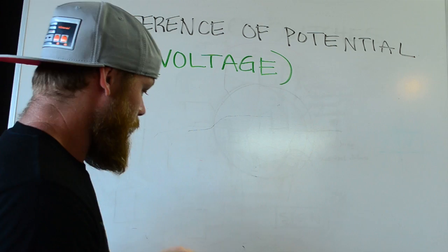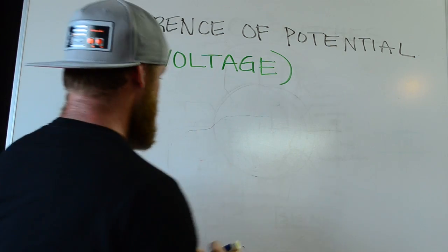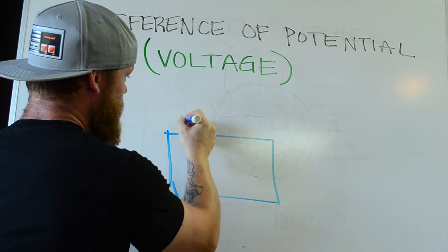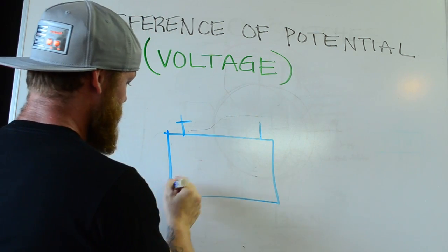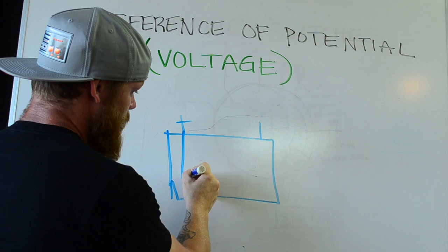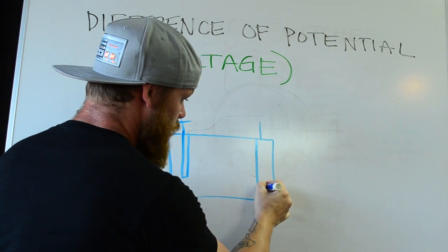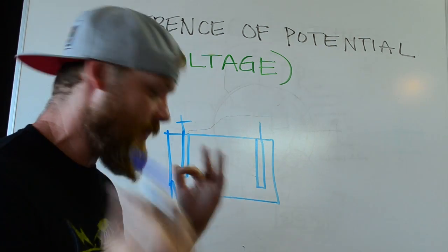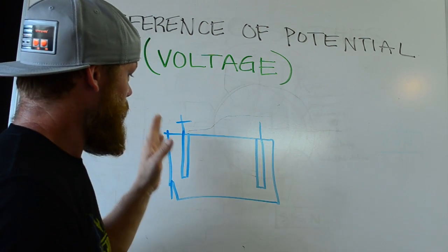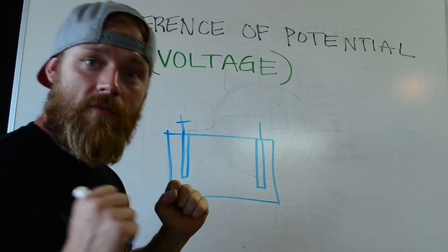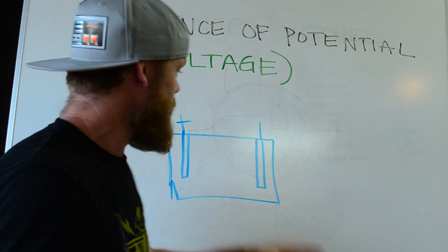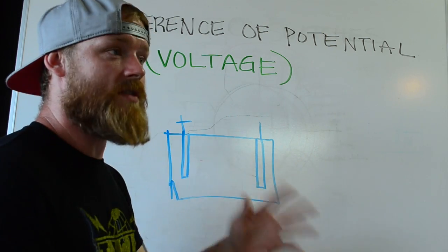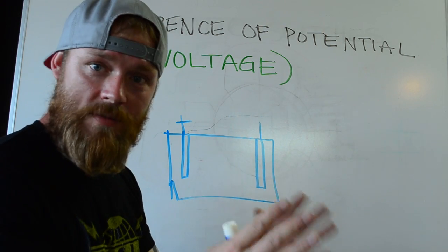The most simple thing I can think to draw is a battery — think of a car battery. You've got a positive and a negative. Well, inside there you have a rod on one side and a rod on the other side. Each one of these rods is made of different materials. Essentially you have a material that freely gives up electrons and you have a material that freely takes electrons.